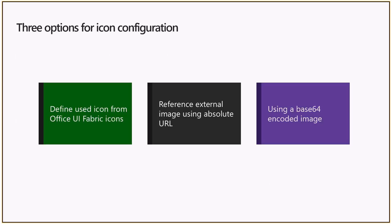The third option is to use a base64 encoded image. You do a base64 encoding of the image and put that into the manifest, so every time the web part picker is used that encoded string is transformed into an image and rendered on the page. One downside is that base64 encoding produces quite a large string, so it will consume some bandwidth traveling through the wire.